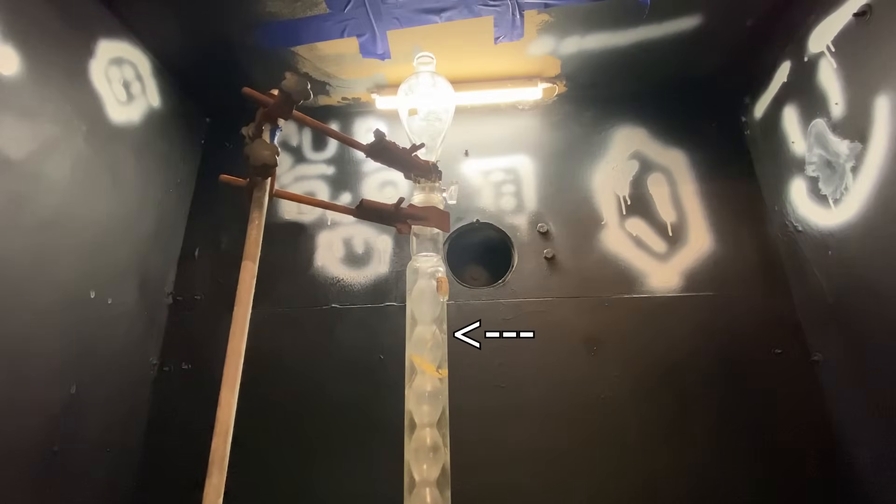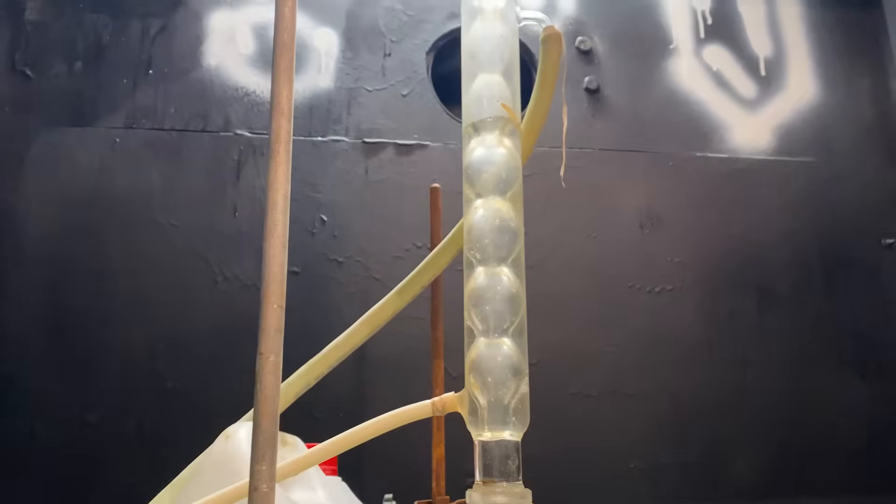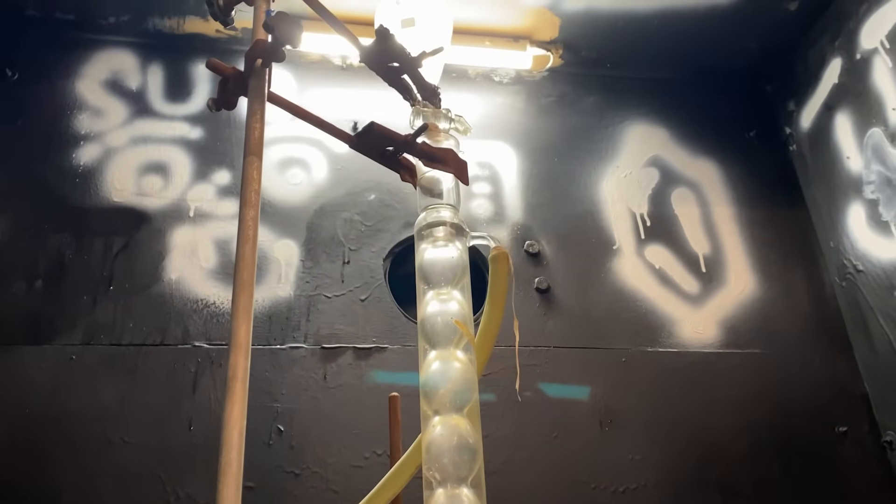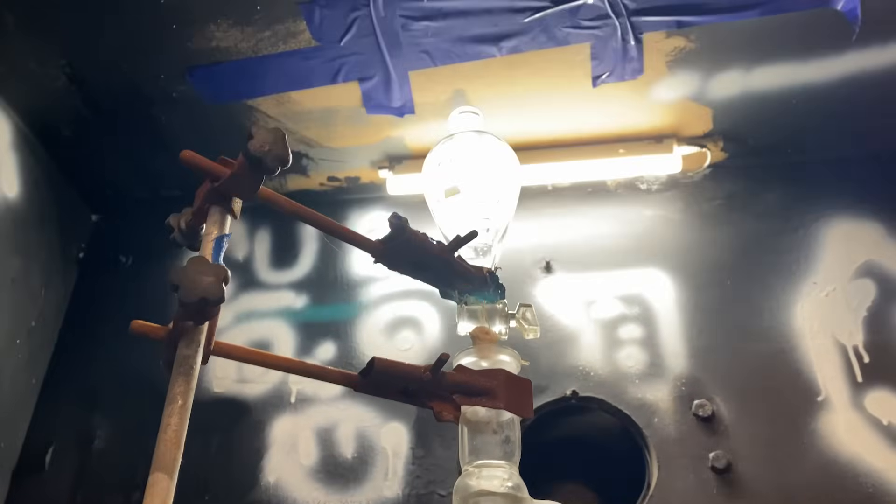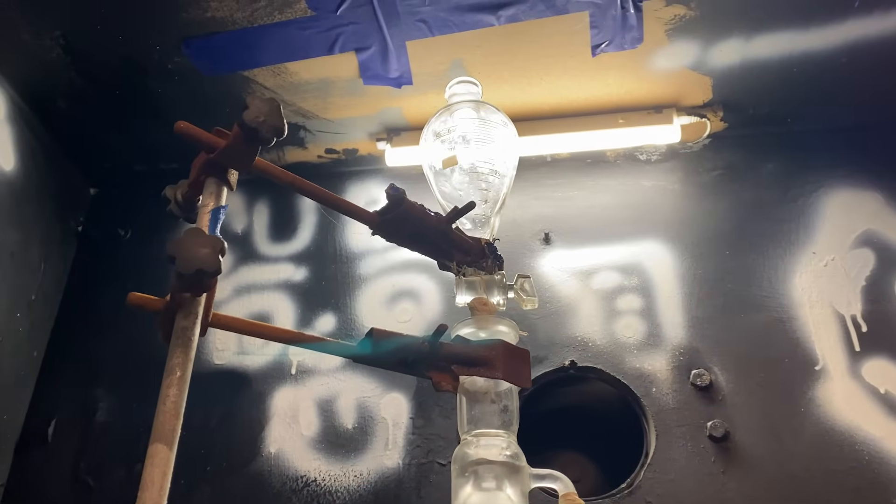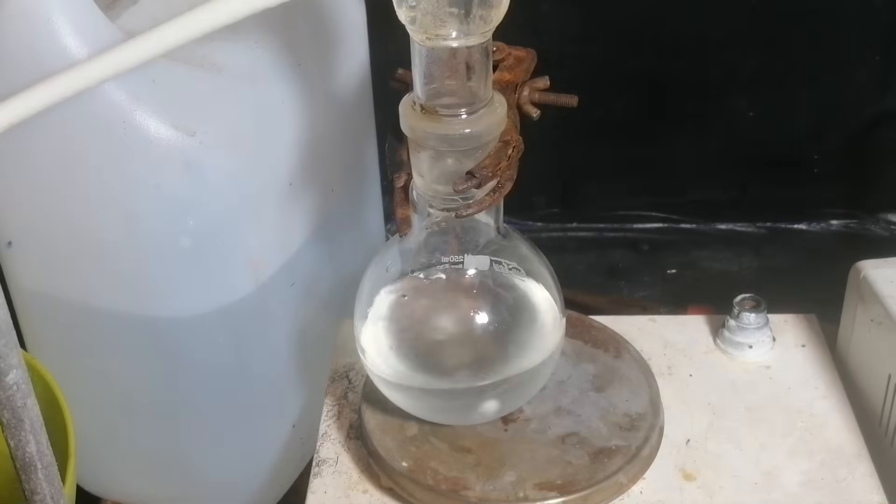Then I've attached an Allihn condenser, which is a condenser with these glass bulbs that is specifically built for refluxing. And I've turned on my water pump, and a bunch of ice-cold water started flowing into it. Finally, I've attached a separatory funnel on top, and I've added an undisclosed amount of isopropyl nitrite into it. Now we're locked and loaded, and all it takes to begin the pandemonium is to slightly turn this glass cork sideways. And so I did.